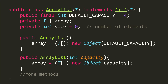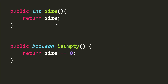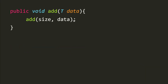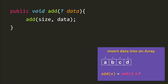Next we implement the methods. The size method returns the variable size. The isEmpty method checks if size equals zero — returning true if so, false otherwise. The add method for adding at the end calls a two-argument add with the current size as the index, because adding at the end is equivalent to inserting at index size.